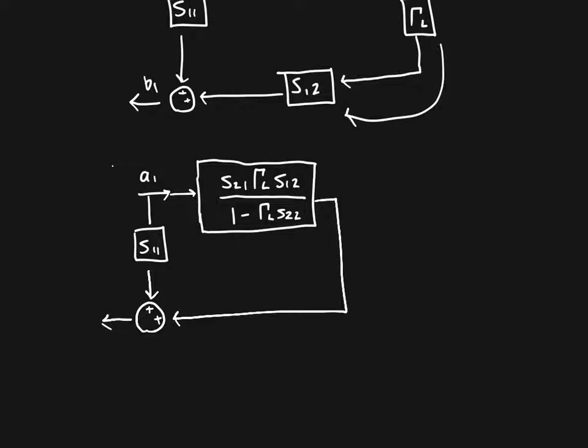And then we've got another path S21 and then a summing junction down here, both positive. And our output B1. And we know if we've got two signals in parallel and they're summed, all we need to do is add them. So we can say that B1 is equal to A1 times S11 plus A1 times S21, S12, gamma L over 1 minus gamma L S22.